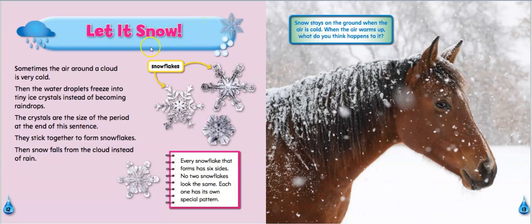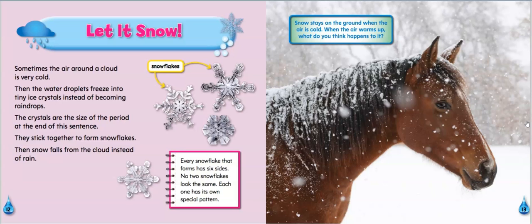Let it snow. Sometimes the air around a cloud is very cold. Then the water droplets freeze into tiny ice crystals instead of becoming raindrops. The crystals are about the size of the period at the end of this sentence. They stick together to form snowflakes. The snow falls from the cloud instead of rain. Every snowflake that forms has six sides. Snow stays on the ground when the air is cold, but when the air warms up, it's going to melt and be part of the water cycle again.